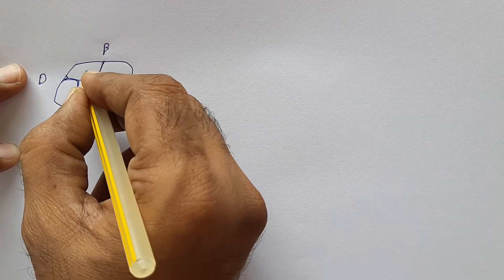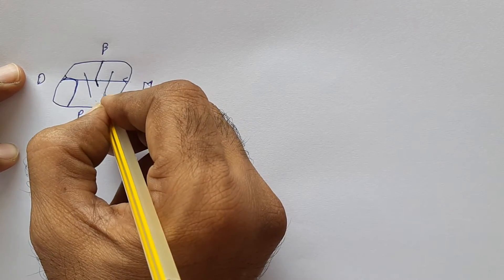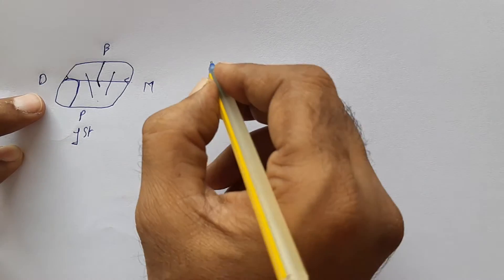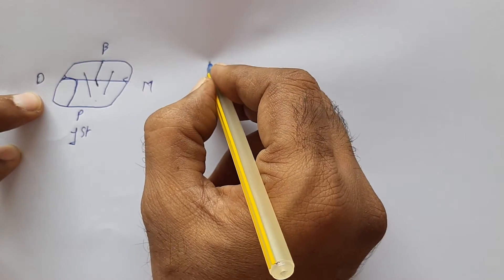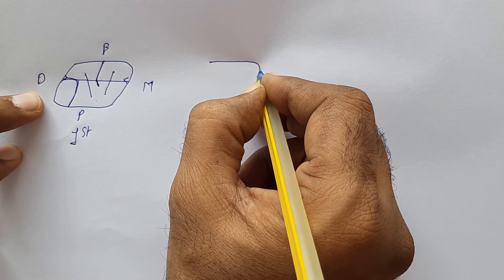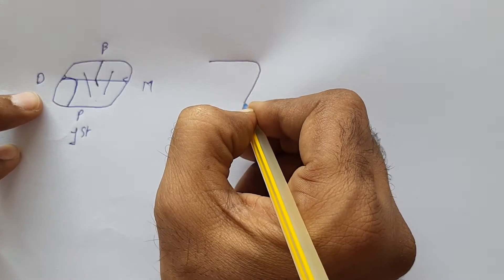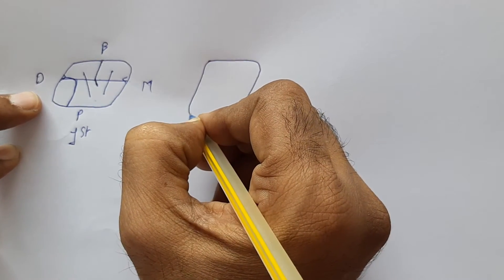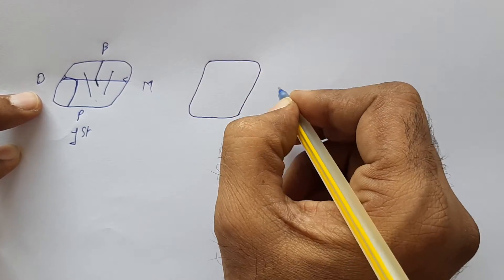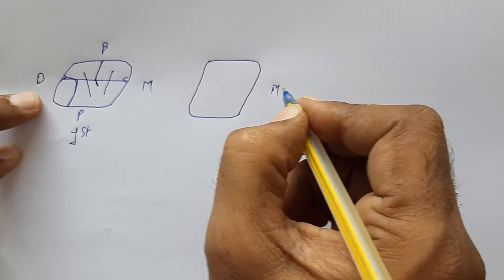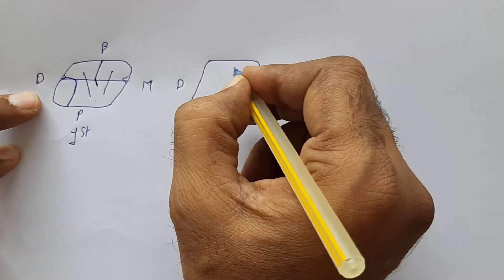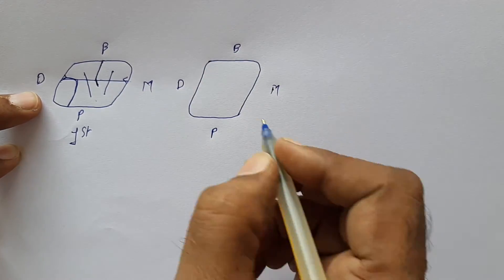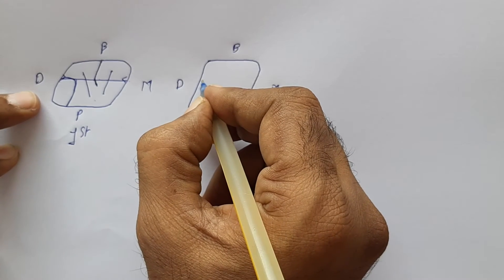This will be your oblique ridge, this will be the transverse ridge. Now in the second molar — more obtuse angle and more acute angle. Mesiodistally it is not wider; this is mesial, this is distal — it is less wide than the buccopalatal dimension.